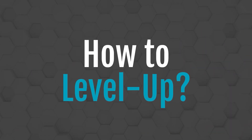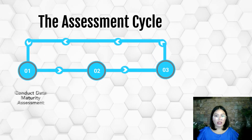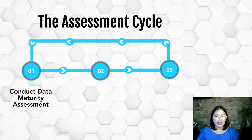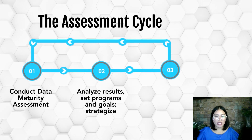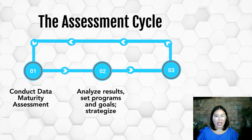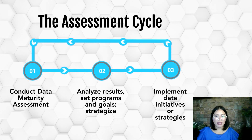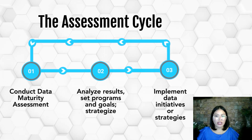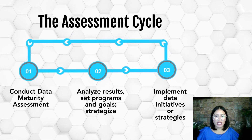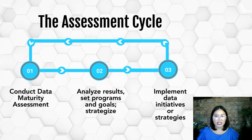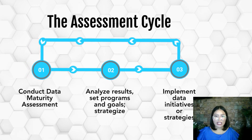How can LGUs level up their data readiness? Here is the proposed assessment cycle. The LGU may conduct a first round of data maturity assessment, then analyze results, set programs and goals or strategies on how to implement the improvements, then take time to actually implement them, then conduct another round of data maturity assessment. If there are further improvements to make, the LGUs may repeat the process until the desired maturity level is achieved.